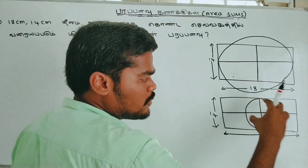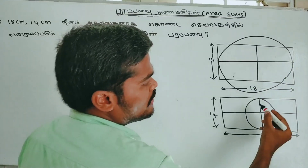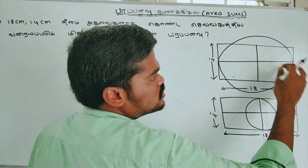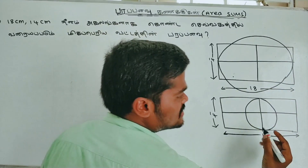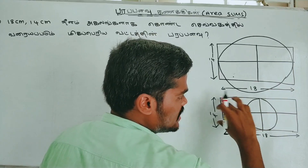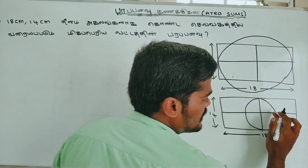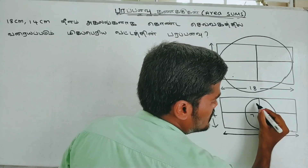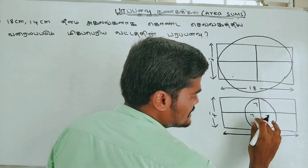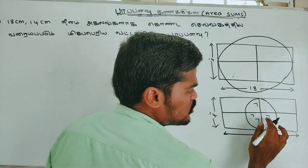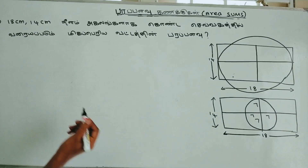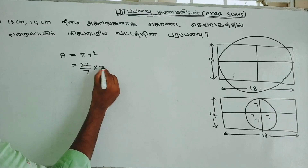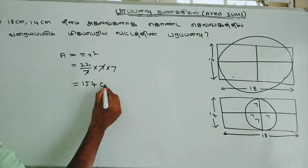In a rectangle of length 18 and breadth 14, we inscribe a circle. The breadth is 14, so the diameter = 14 and radius = 7. The area of the circle = πr² = (22/7) × 7 × 7 = 154 cm². This is the required area.